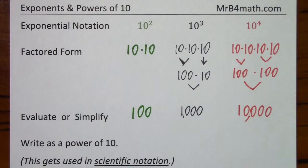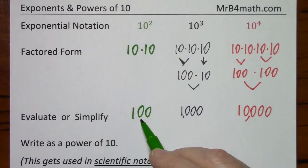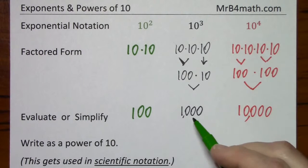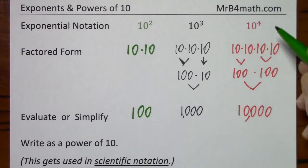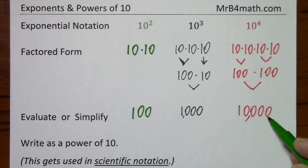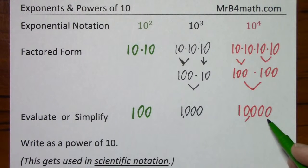So the pattern may be obvious right now. I'll point it out explicitly. 10 to the 2nd leaves you with two 0s. 10 to the 3rd leaves you with 3. And 10 to the 4th leaves you with 4. This pattern is dependable. It continues forever. So 10 to the 5th would have 5 0s.